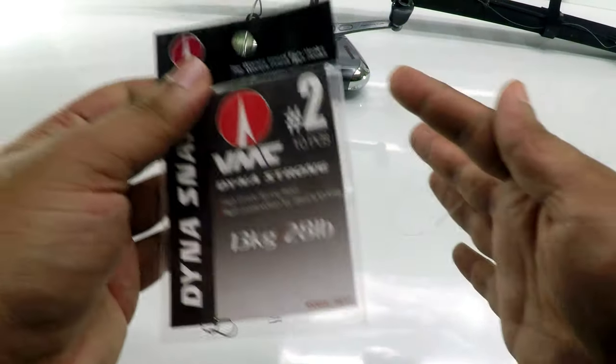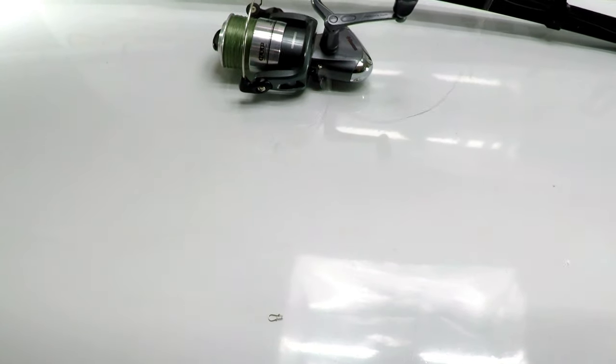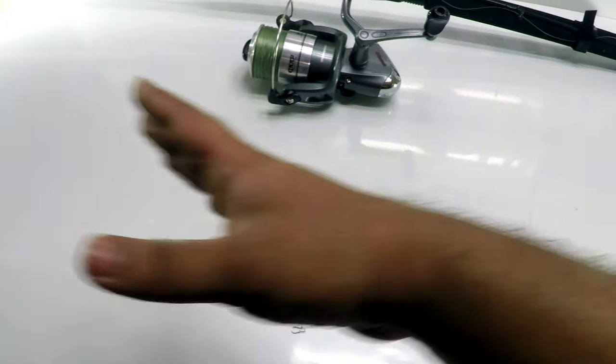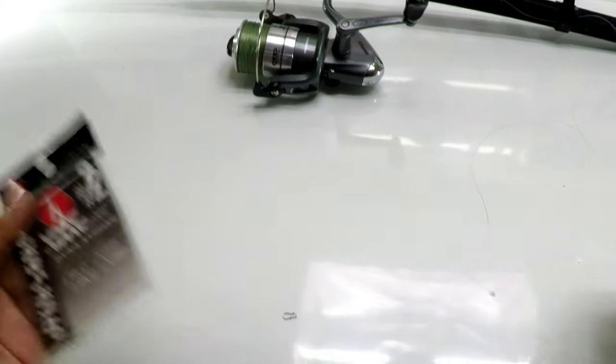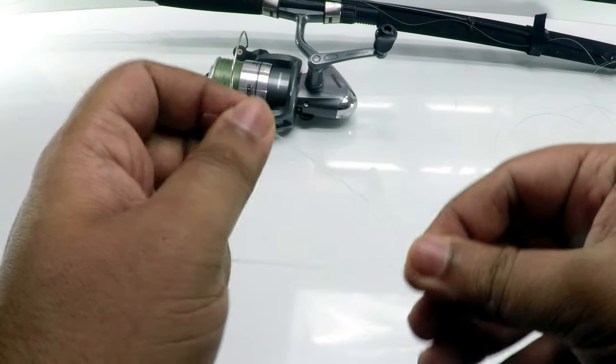I've kept my whole setup in the range of 13kg. The main line is Advance 0.30 which holds 13kg, the shock leader is 0.50 which holds around 15kg, and the barrel swivel holds around 13kg.